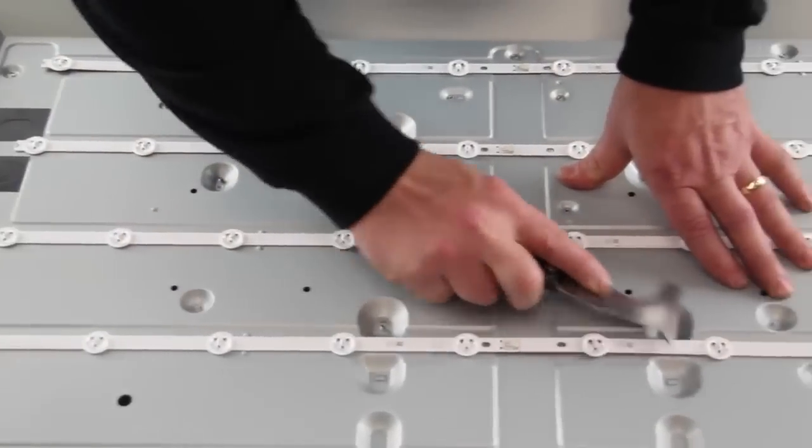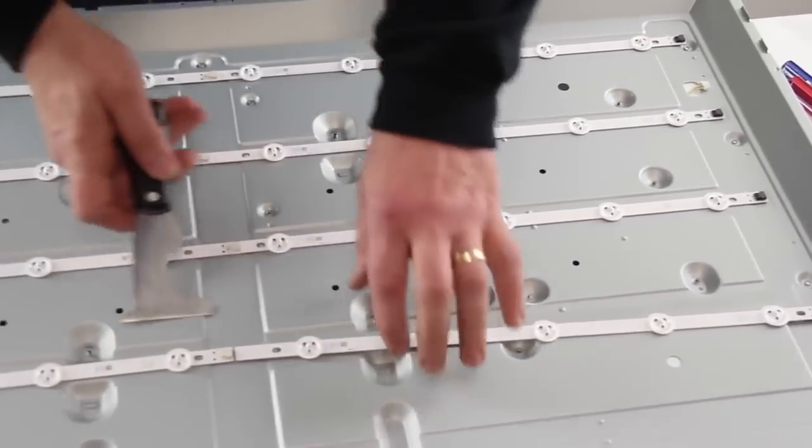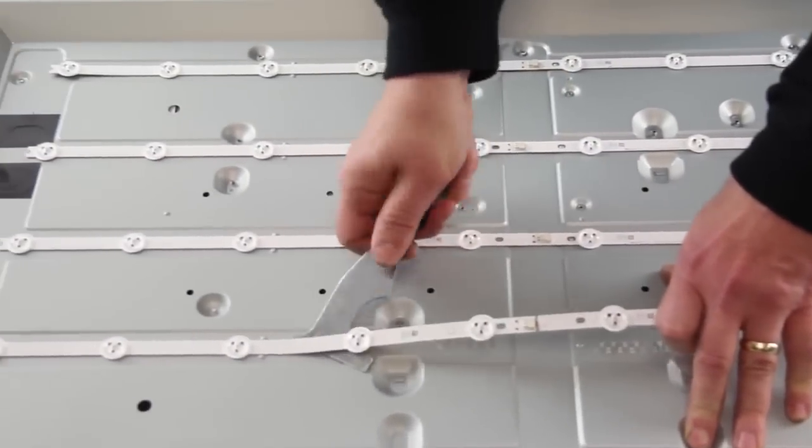If you do have a bad LED strip, it is recommended to replace all of the strips in your TV as once one of them goes out, they can all begin to fail.